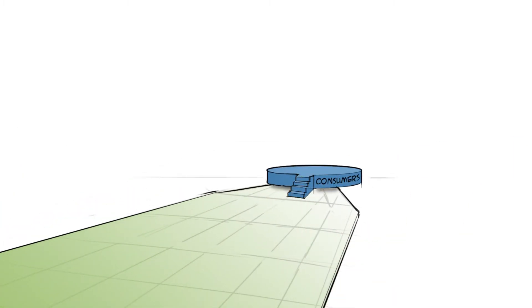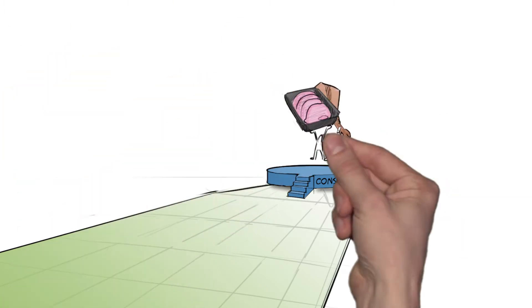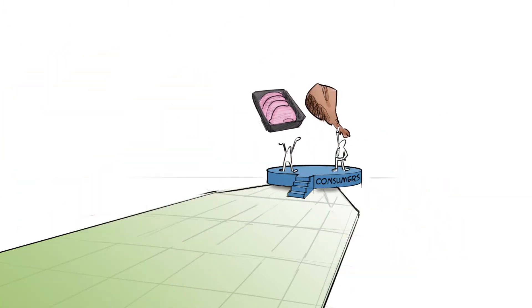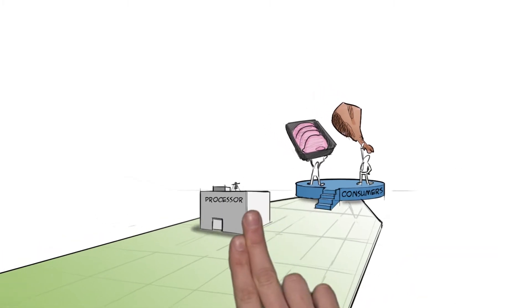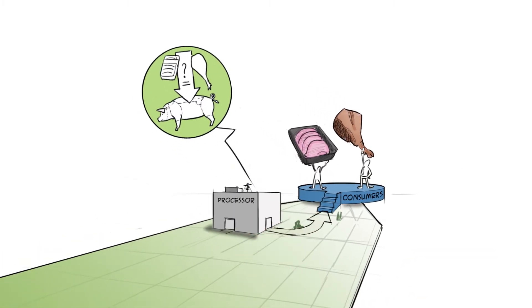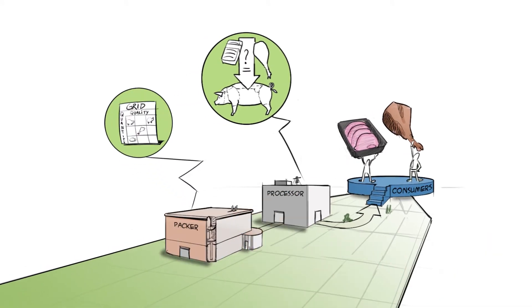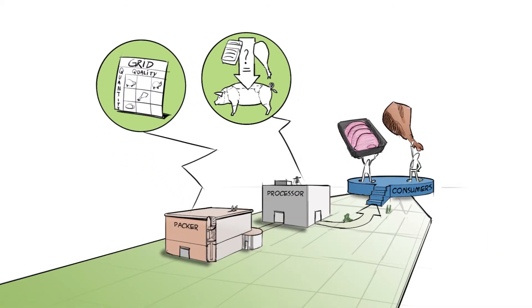Consumer demands define the pork production system and the value chain adjusts its output to meet those needs. Processors choose meat with the desired characteristics. Packers translate demands into a market grid.